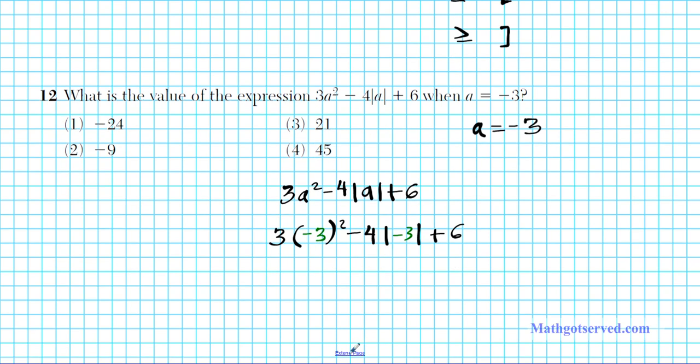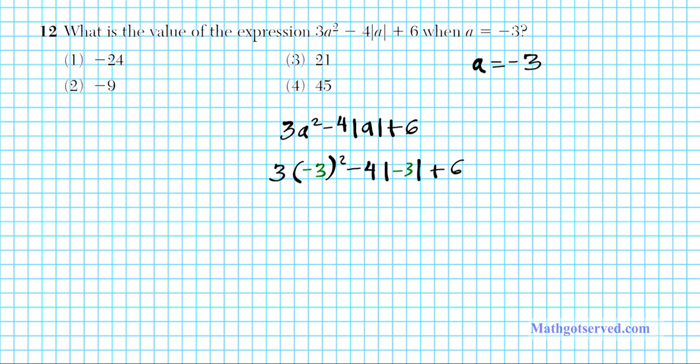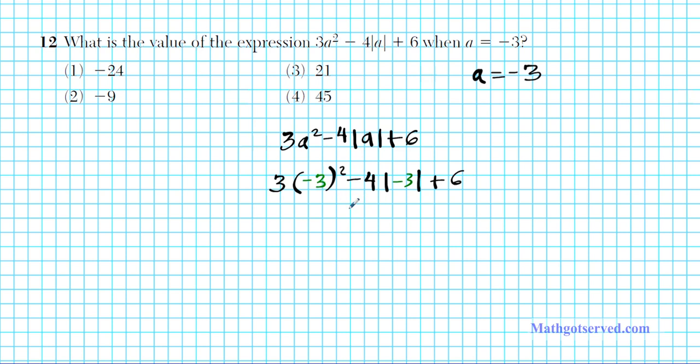Now let's go ahead and simplify this expression. This basically assesses our ability to accurately use the order of operations to simplify arithmetic expressions. So we have to deal with the parenthesis first, so this square has to be resolved likewise this absolute value situation here. So negative 3 squared, negative times negative is positive, 3 times 3 is 9. So negative 3 squared is 9. Minus 4 times the absolute value of negative 3, which is positive 3. Absolute value just represents the distance of a number from 0 on a number line. In this case it's 3. Plus 6.